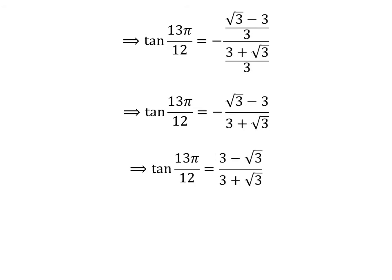Minus of square root of 3 minus 3 is 3 minus square root of 3. So tangent of 13 times pi upon 12 is equal to 3 minus square root of 3, upon 3 plus square root of 3.